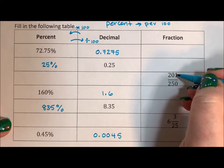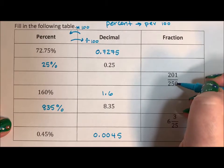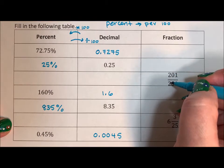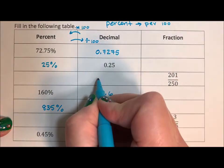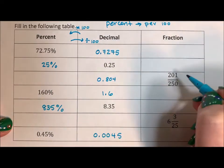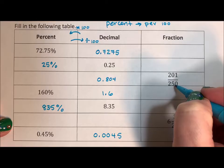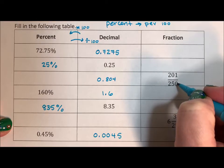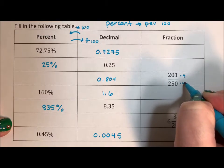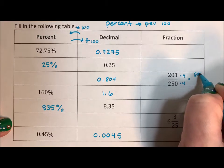So we could just throw this into a calculator. And if we took a calculator out and said 201 divided by 250, we would just get 0.804. Now, if we're doing this without a calculator, 250 goes into 1000 four times. So if we multiplied the top and bottom by 4, we would get 804 over 1000.